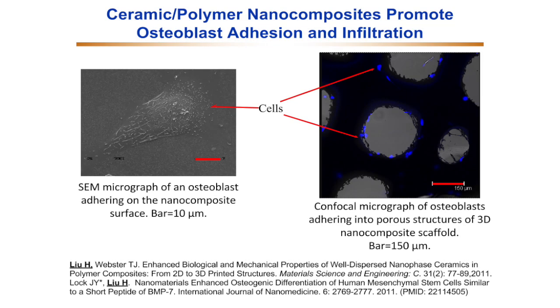The first example I would like to share is ceramic-polymer nanocomposites that promoted osteoblast adhesion, long-term functions, and infiltration. When we disperse ceramic nanoparticles — for example, titanium oxide nanoparticles or hydroxyapatite nanoparticles — into a polymer matrix, the nanocomposite materials promoted bone-forming cell osteoblast adhesion.